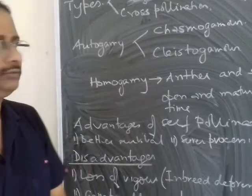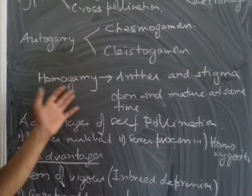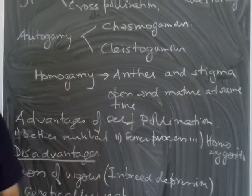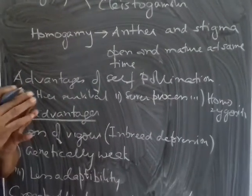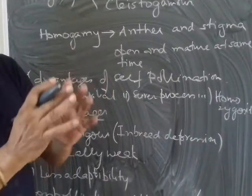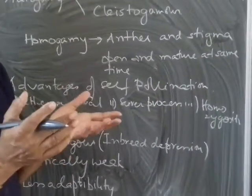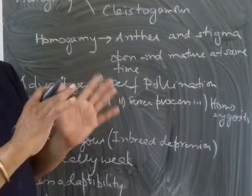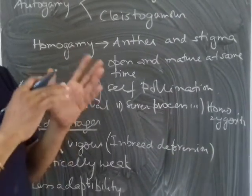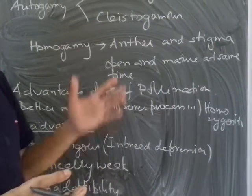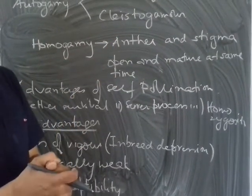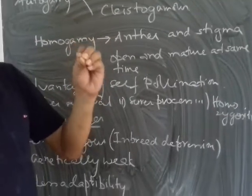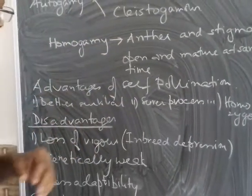Homogamy means the anther and stigma open and mature at the same time. When both mature simultaneously, there is a greater chance of self-pollination because the pollen drops from the anther to the stigma without any barrier. If there is a correct pollen-pistil interaction, this leads to a self-pollinated flower.